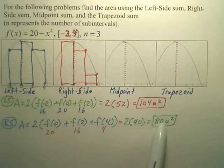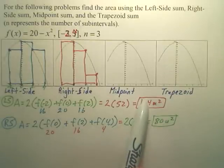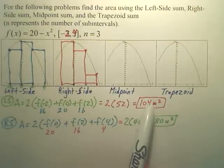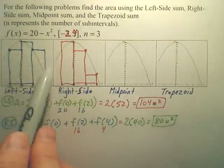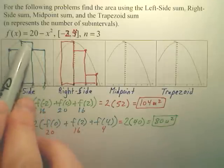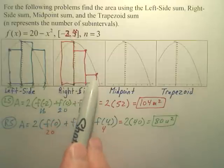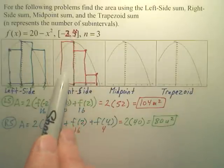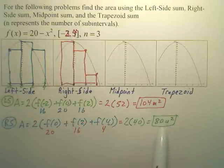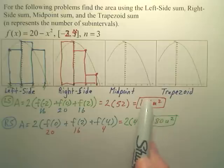Does that make sense that this one is smaller? Isn't this an over-approximation mostly? Doesn't it look like the left-side rectangles have a lot of area outside the curve, while the right-side looks like it's mostly underneath? So shouldn't this be an under-approximation? Your answer should be somewhere between 104 and 80.